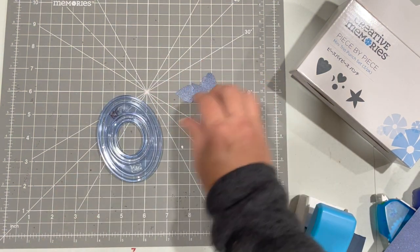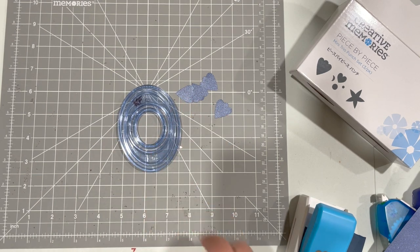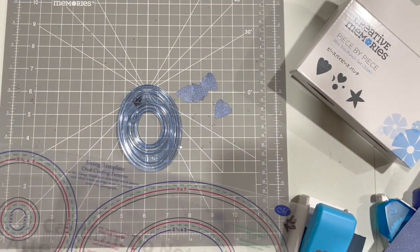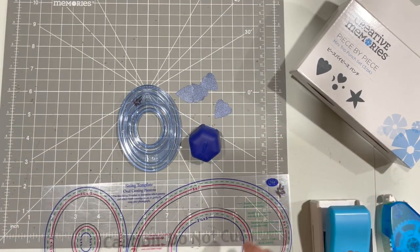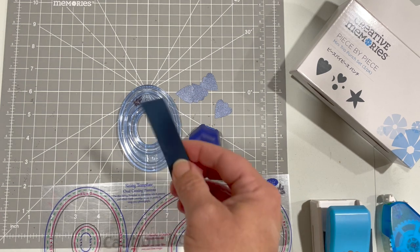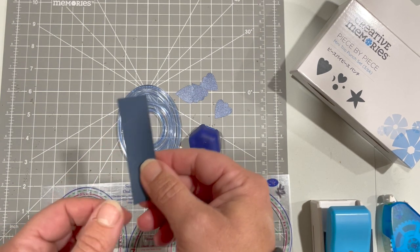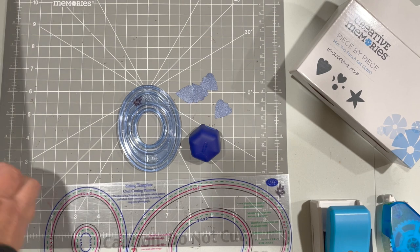And then with the custom cutting system, the small oval, I use the smallest with the blue blade and to make it proportional I cut a strip that is three-quarter of an inch.